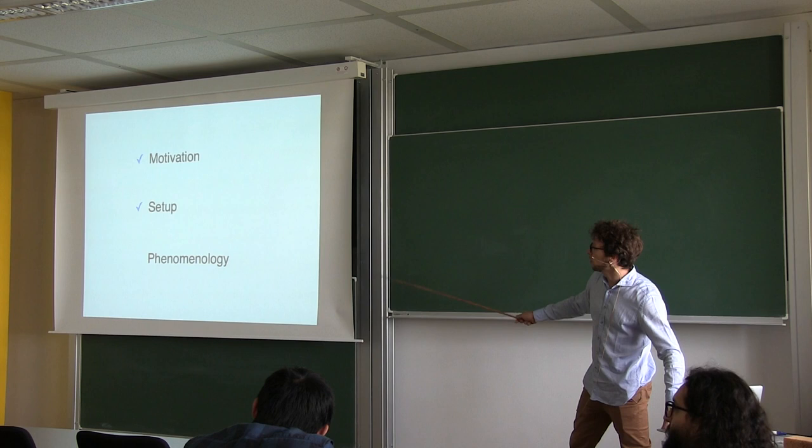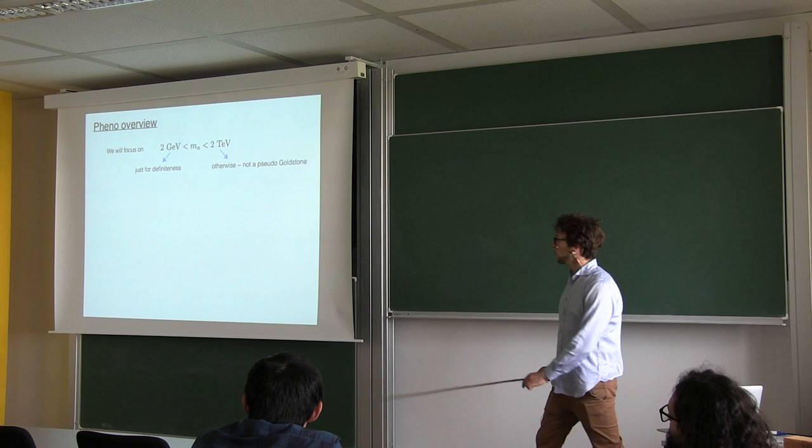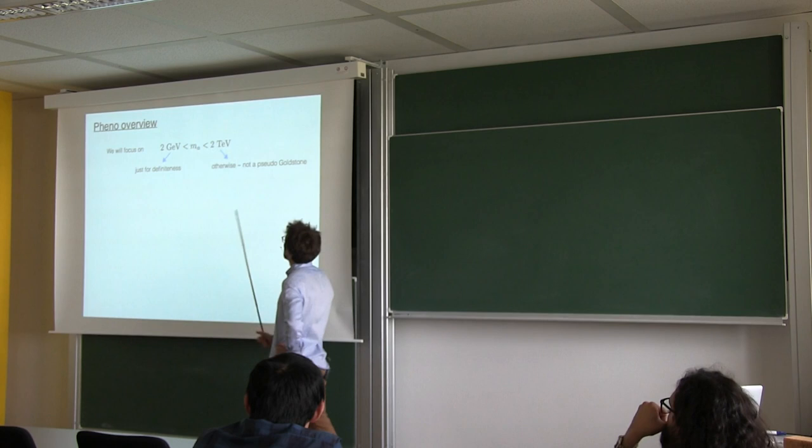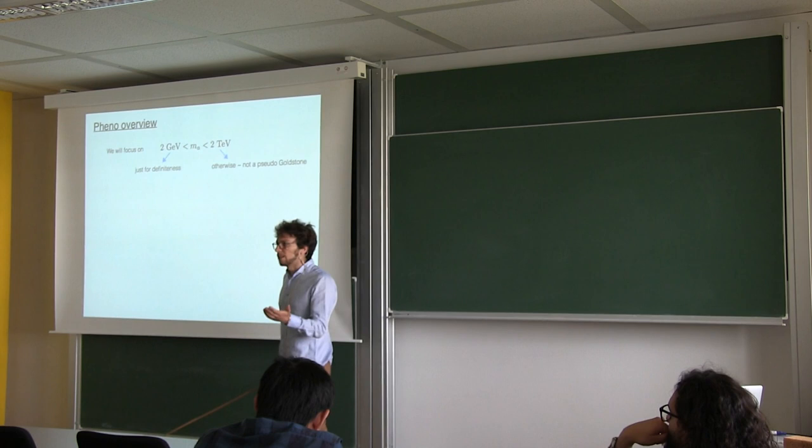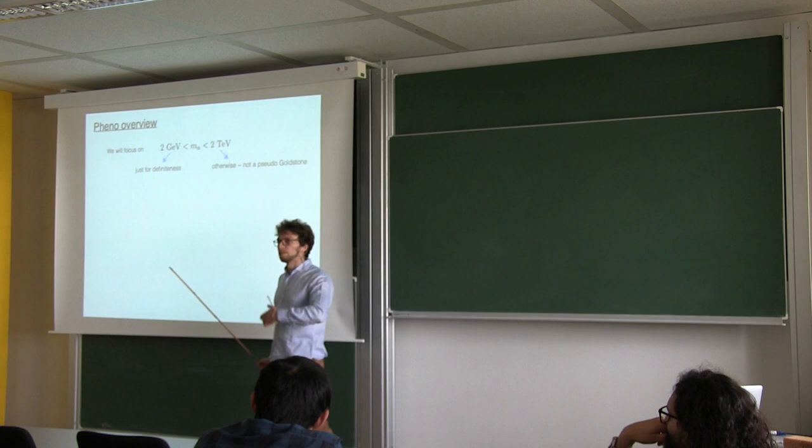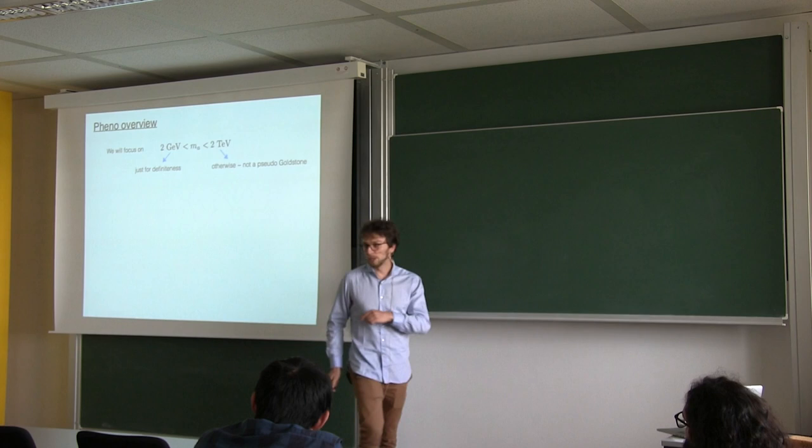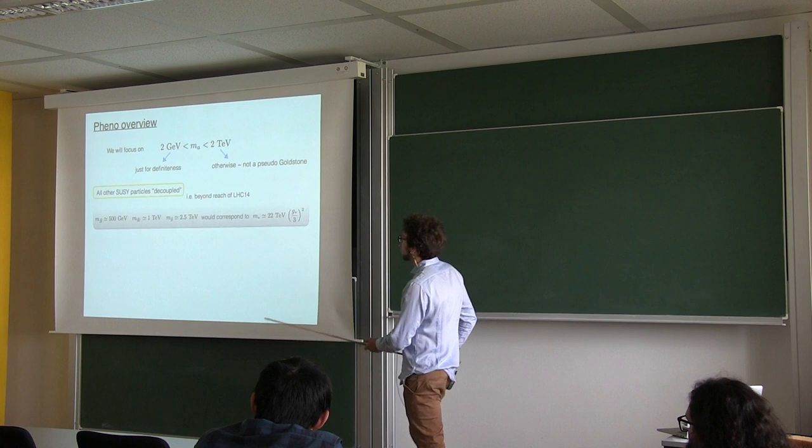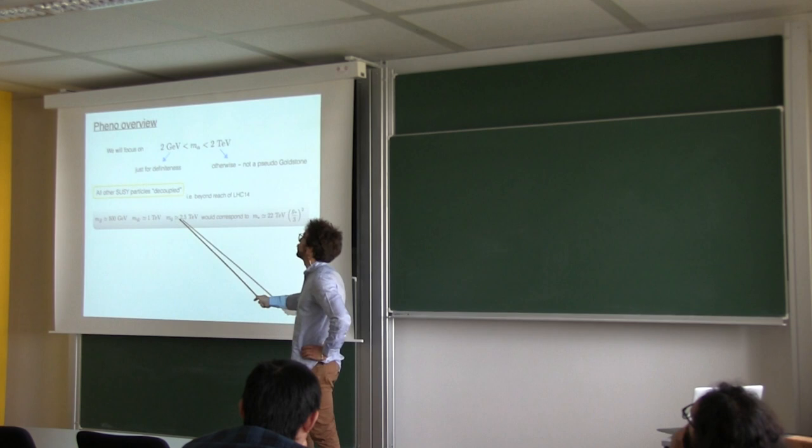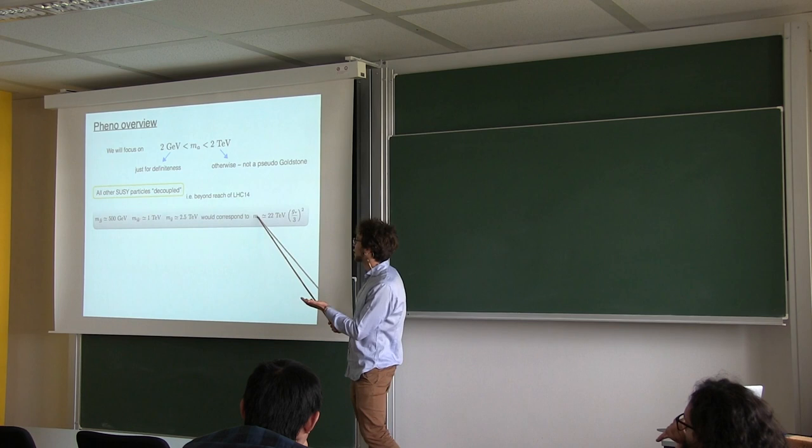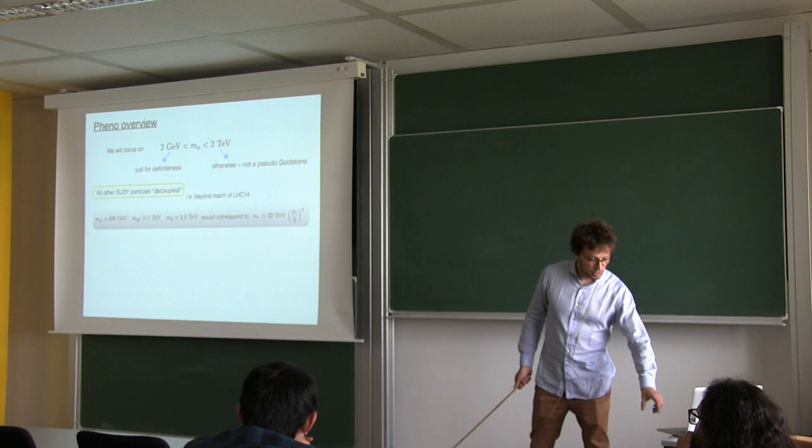This was just to provide a sketch of a possible UV completion that I will not touch later. And now I come to the phenomenology. First of all, what we studied in this paper was this region of masses between 2 GeV and 2 TeV. 2 TeV, if you want, is just a psychological upper bound, because we want to still be talking about a pseudo-Goldstone boson. And if you take it too heavy, then it's not a Goldstone anymore. And this mass range is arbitrary. It's just for definiteness, because there was already so much phenomenology here that we didn't want to go in the region of beam dump and other experiments. But, of course, it would be motivated and worth to go below this value. Then, we also assume other particles to be decoupled. Decoupled means beyond the reach of LHC14, so that a benchmark of decoupled particles is, for example, the following one: binos at 500 GeV, and so on, gluinos at 2.5 TeV. This, just to match it with the previous description, would correspond to a scale of messengers of roughly 20 TeV for a coupling g_star that is 3.